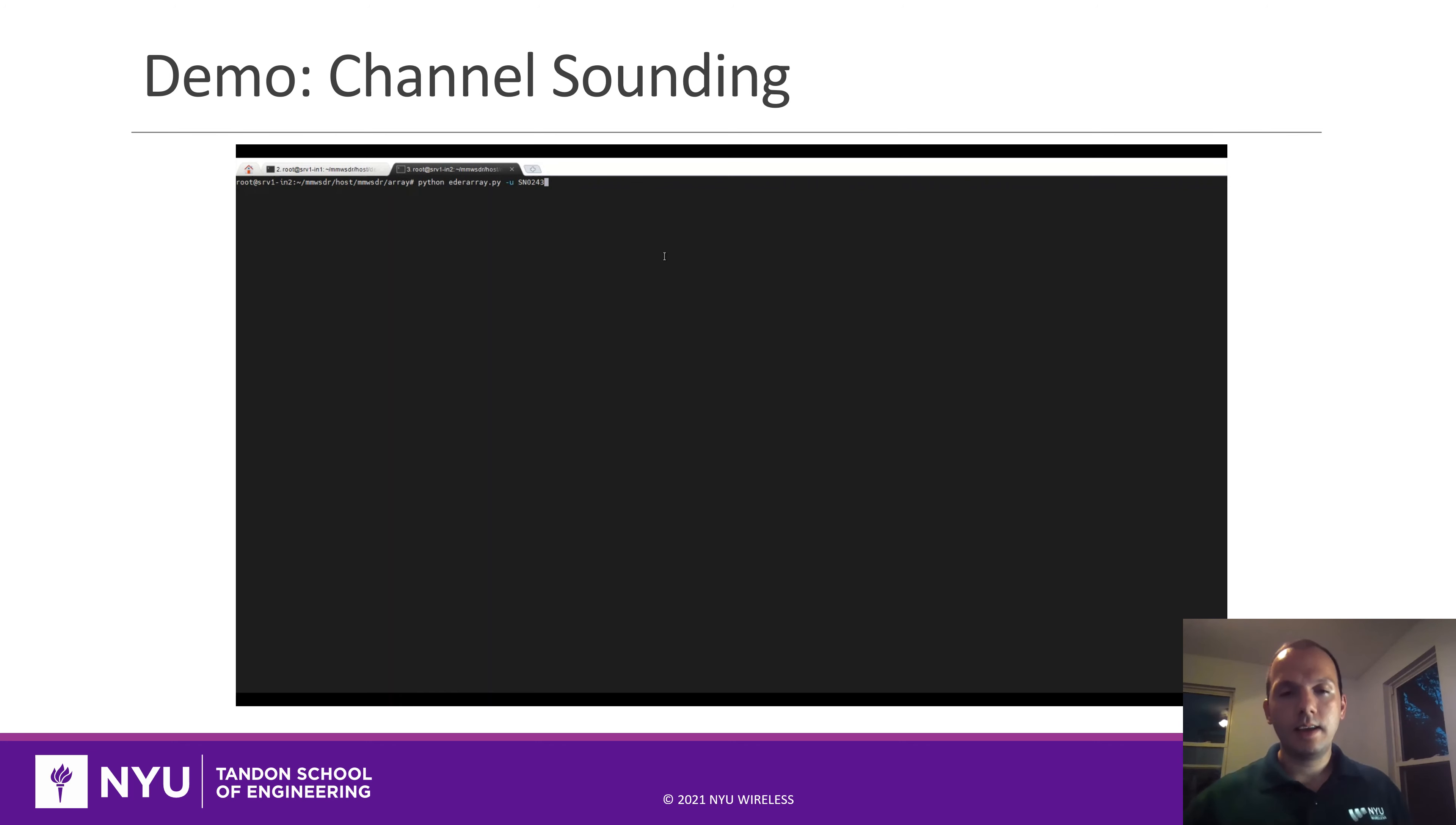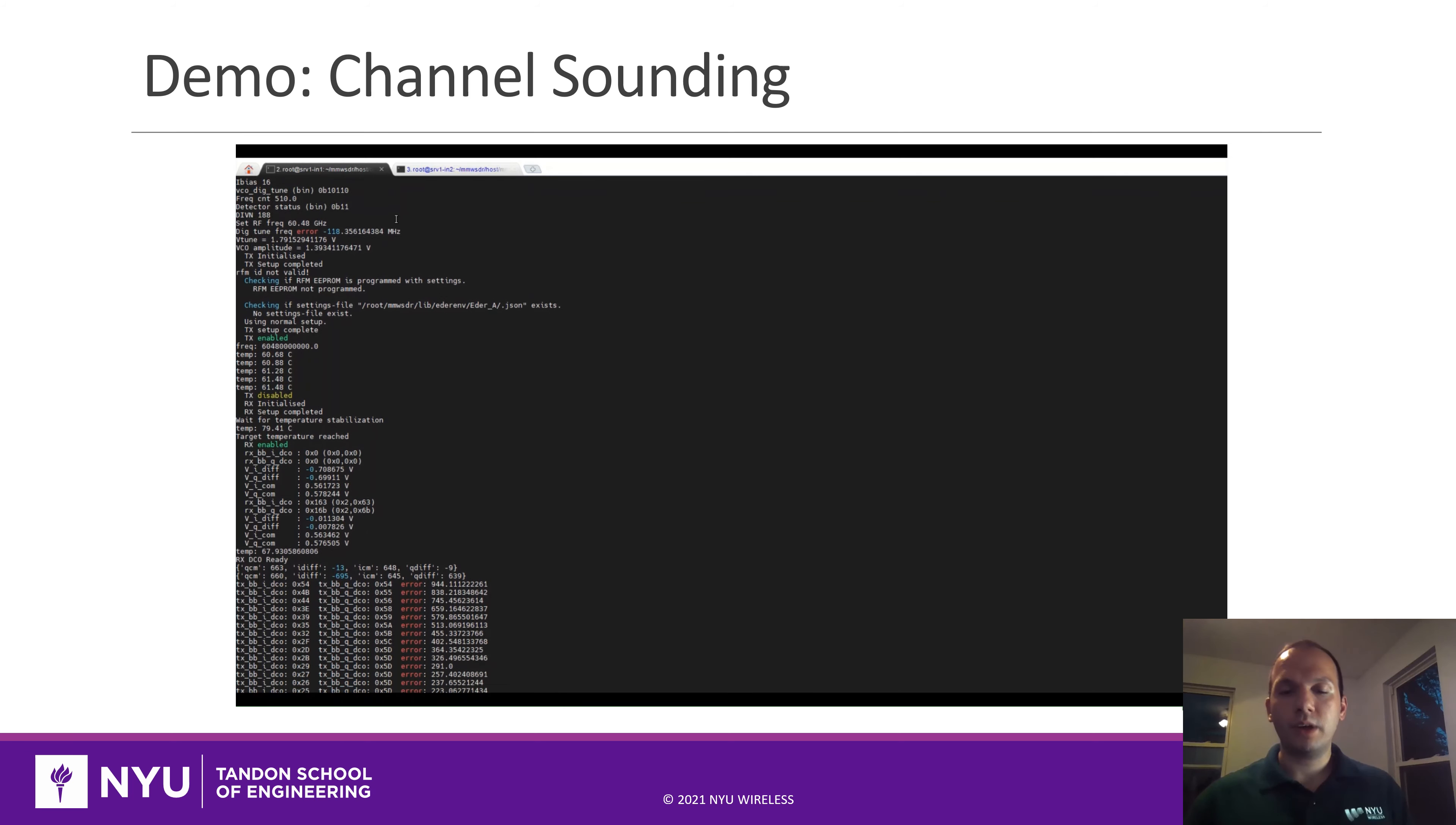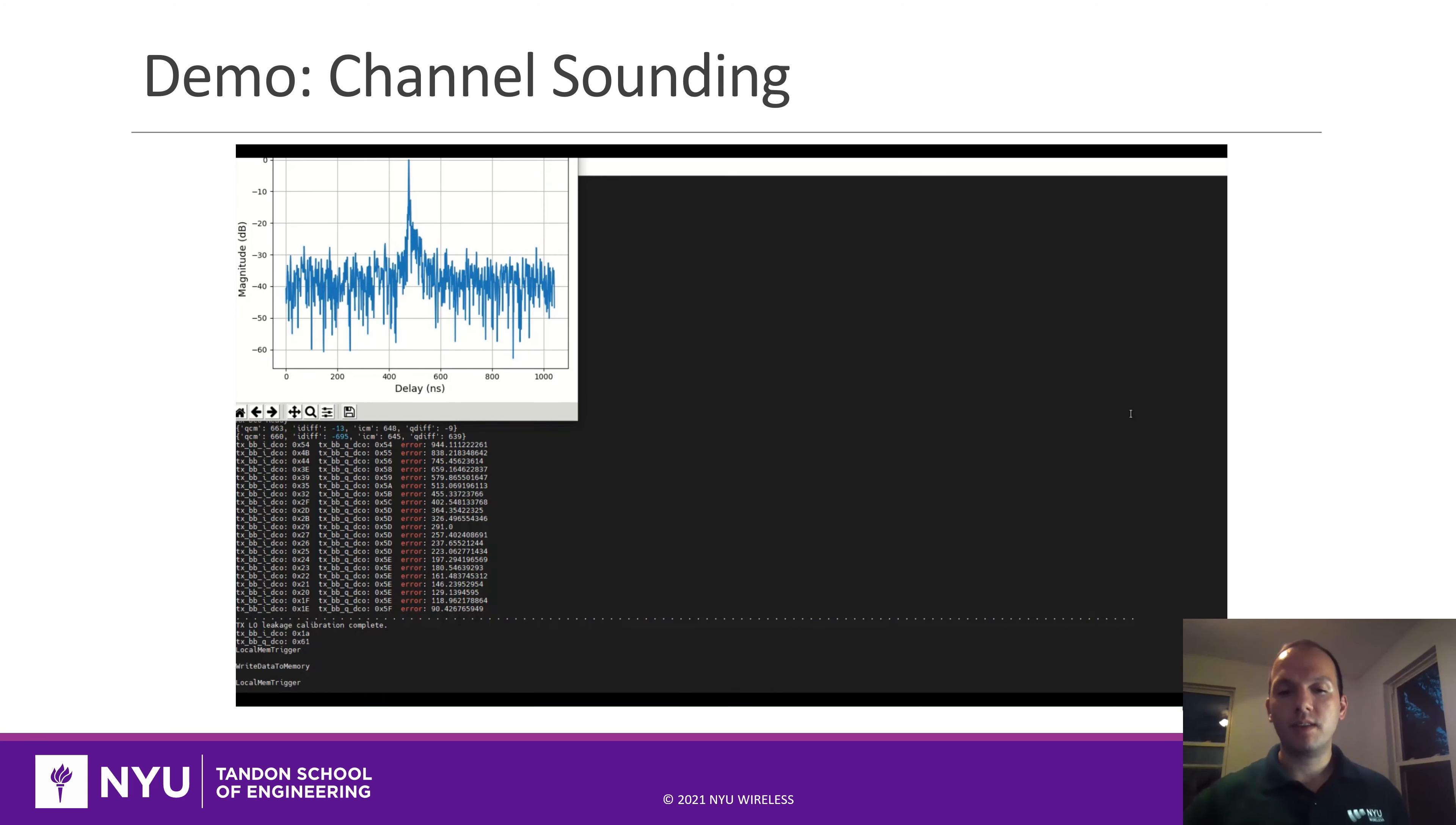Here you can see a demo of how you can run the script. Basically, in one of the servers, we will start our custom web server that is controlling the Sivers arrays. On the other end, we will start our channel sounding script that will configure the arrays and the FPGA boards. Then you see the IQ calibration of Sivers running every time. Then we send the sequence and receive the sequence at the end. It does the correlation and plots the PDP.